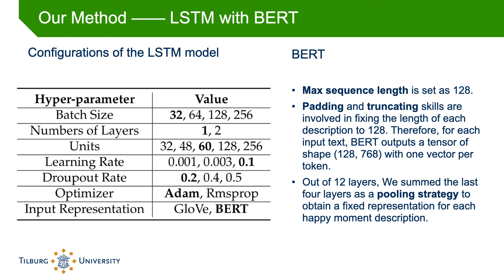For the word embedding algorithms, we experimented with BERT and GloVe. We give a detailed explanation of BERT since it is the highlight of this thesis. There are 24 types of BERT models listed online. We used the BERT-base uncased model: a 12-layer transformer with 768 dimensions, 12 attention heads, and 110 million parameters. Max sequence length is set at 128, with padding and truncating used to fix each description to that length. For each input, BERT outputs a tensor of shape 128×768 with one vector per token. Out of 12 layers, we summed the last four layers as a pooling strategy to obtain a fixed representation for each happy moment description.